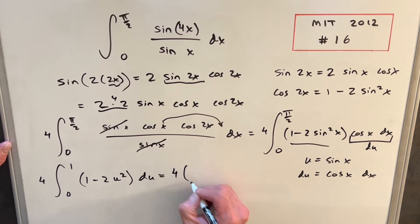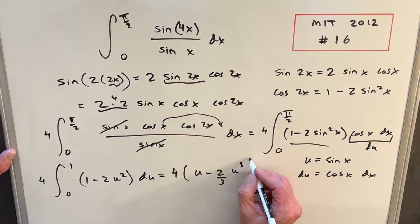Then we'll integrate. We'll have our 4 out front. Integral of 1 is u minus 2. Integral of u squared is going to be u cubed over 3. We're just going to need to evaluate from 0 to 1.